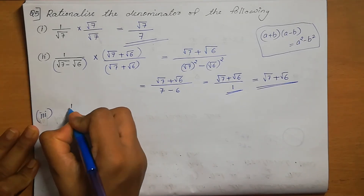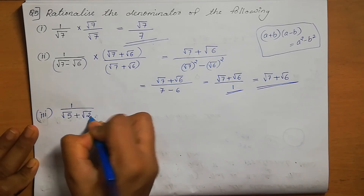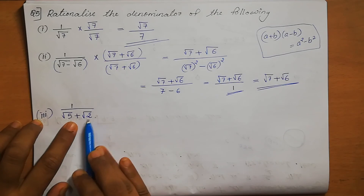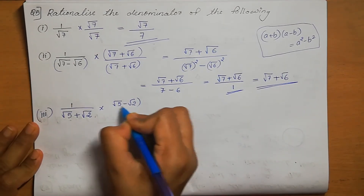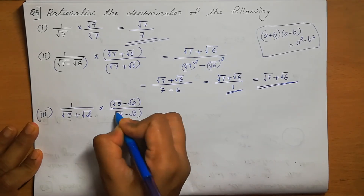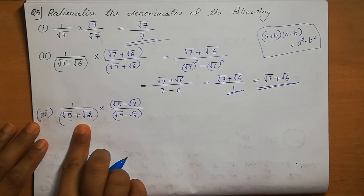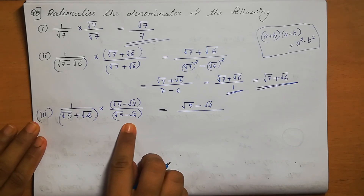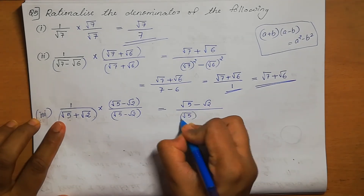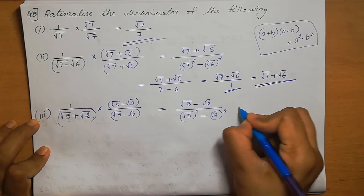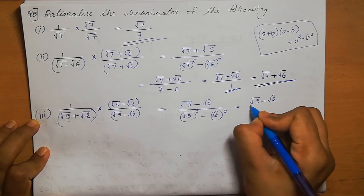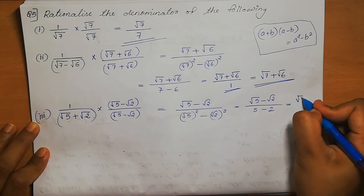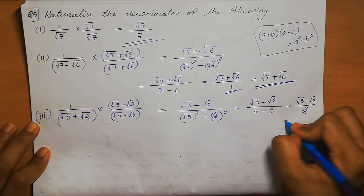Third one: 1 by (root 5 plus root 2). We multiply both numerator and denominator by (root 5 minus root 2). Numerator becomes root 5 minus root 2. Denominator becomes root 5 squared minus root 2 squared, which is 5 minus 2 equals 3. So the answer is (root 5 minus root 2) divided by 3.